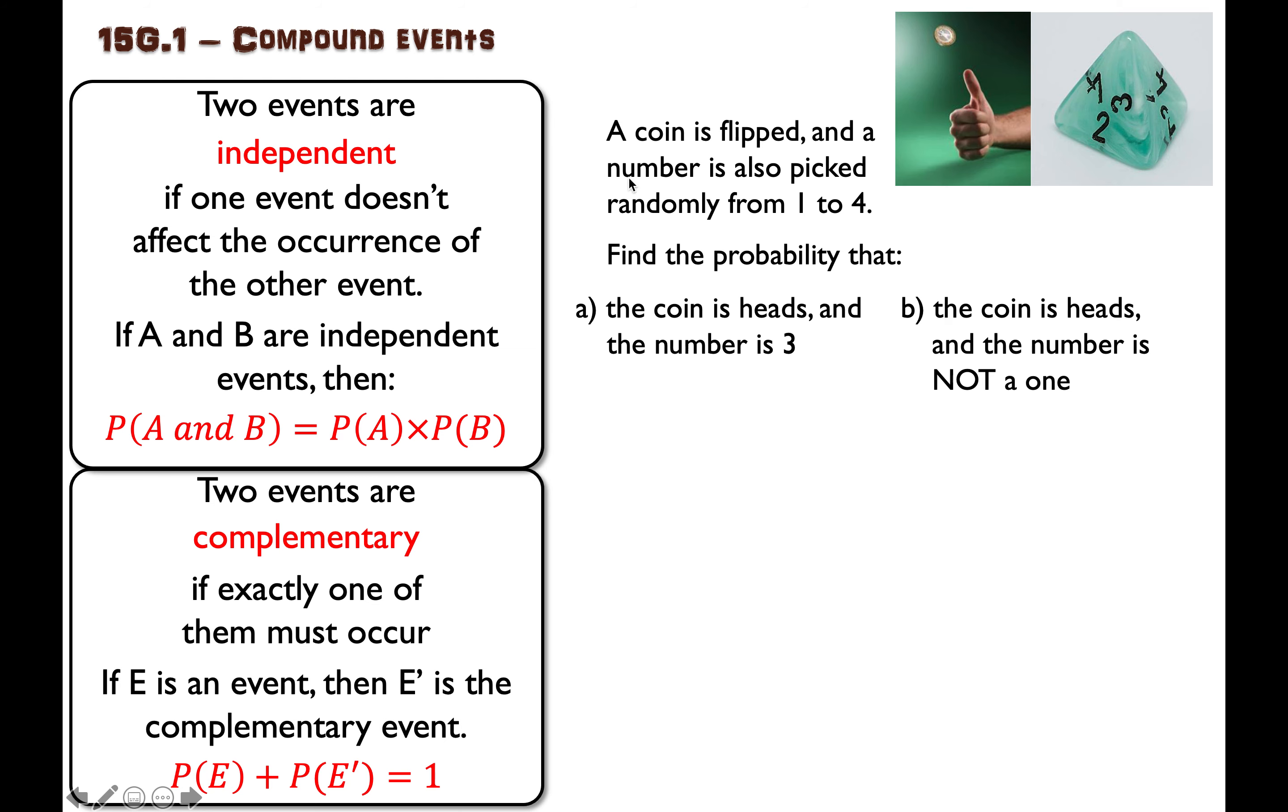The scenario we'll look at is where we're flipping a coin and also picking a number randomly from one to four. First of all, let's find the probability that the coin is heads and the number is three.